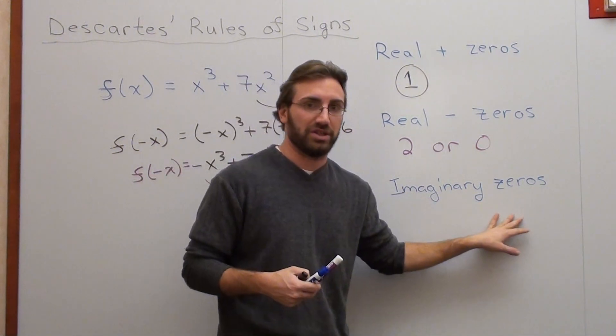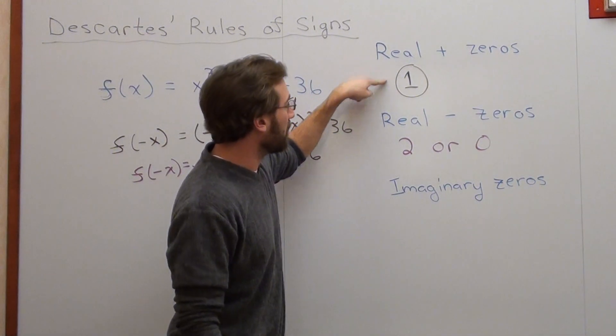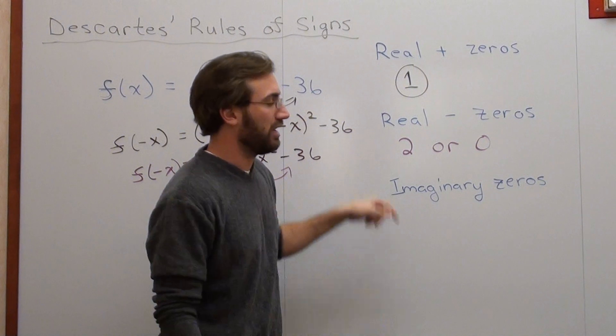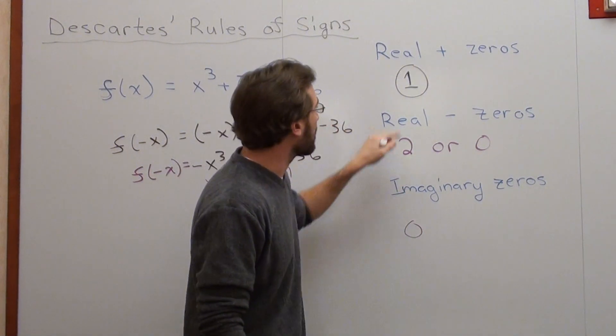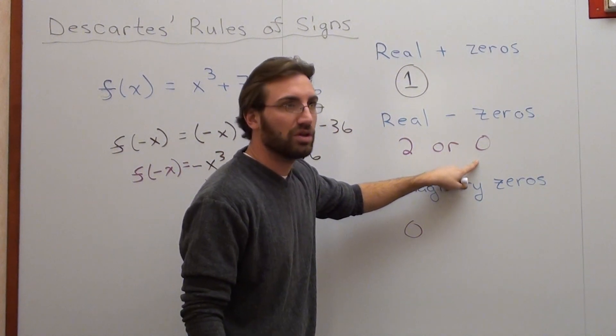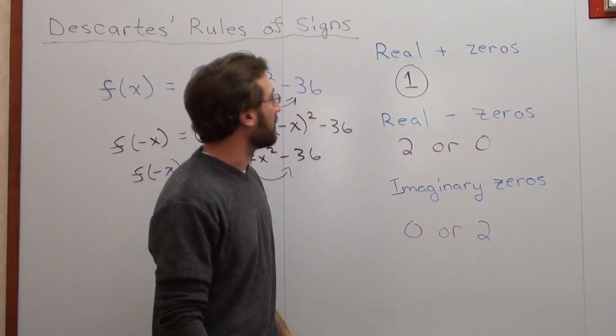What's really interesting here is the imaginary zeros. You have two options. It could be one real positive zero and two real negative zeros, which means three total, so none imaginary. Or it could be one real positive and zero real negative, which is one total, and then you have two imaginary left over.